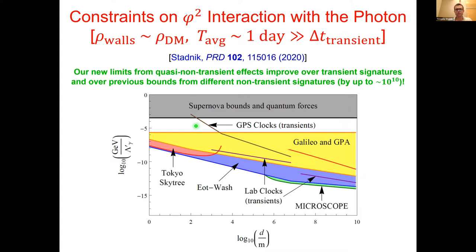We can also consider phi-squared interactions for scalar field domain walls where the energy densities inside the walls could be amplified inside the galaxy to be comparable to the local dark matter density, assuming an average time of passage of order one day — consistent with assumptions in the previous literature. Making these same assumptions as in the earlier transient searches, the limits from accelerometers are shown in green and blue, and clock comparison measurements at different heights in red and yellow. We find a sizable improvement over previous transient signature searches and a very large advantage over non-transient signatures — in some cases an improvement of an order of magnitude.